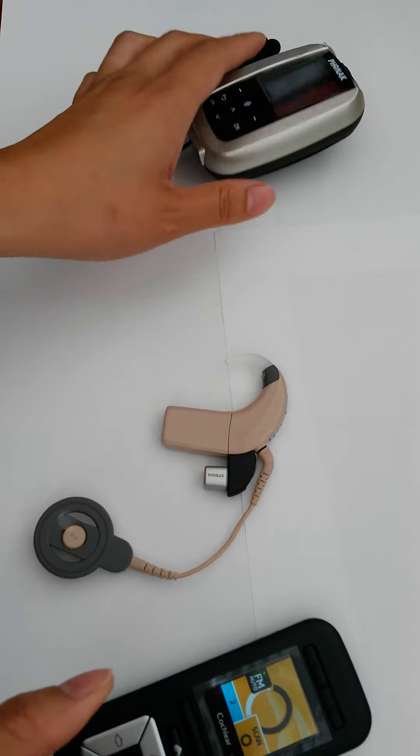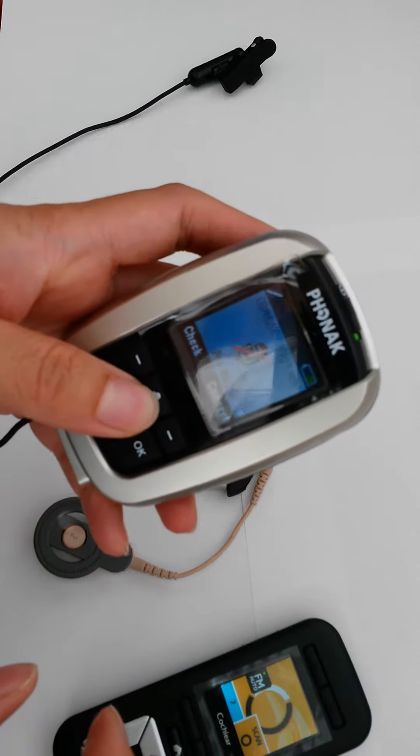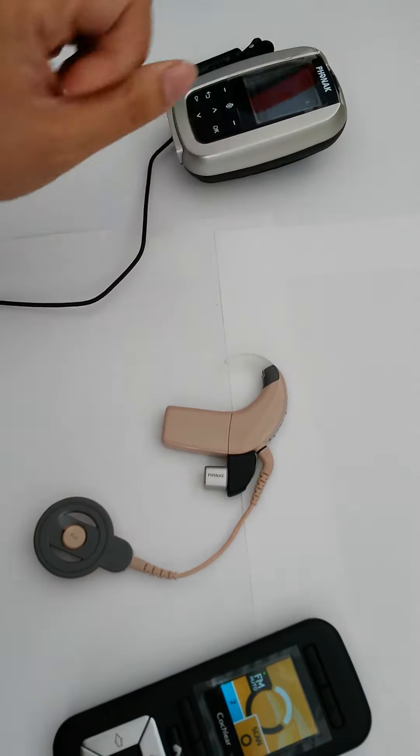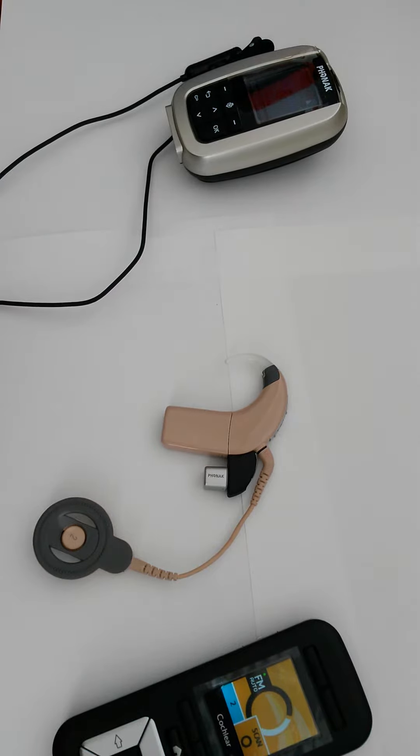When the transmitter microphone is muted or turned off, after about 30 seconds, the processor's FM function goes into standby mode and the dot on the FM icon turns grey, indicating the processor has automatically gone out of FM mode.